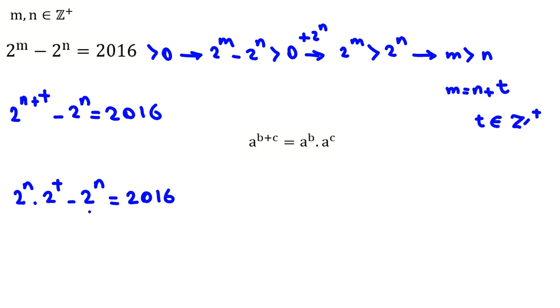Now if we factor 2 to the n from the left-hand side, we get 2 to the n times the quantity 2 to the t minus 1 equals 2016.